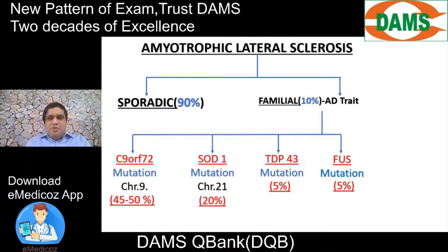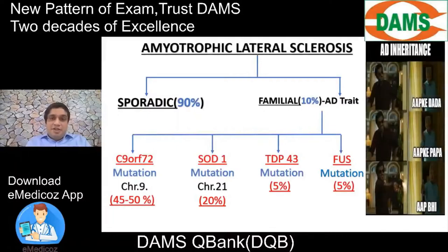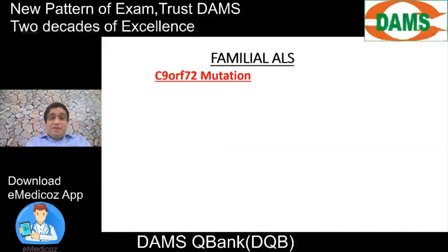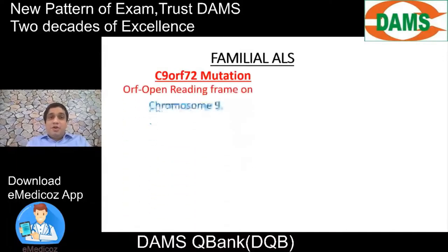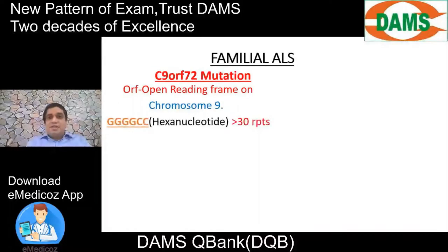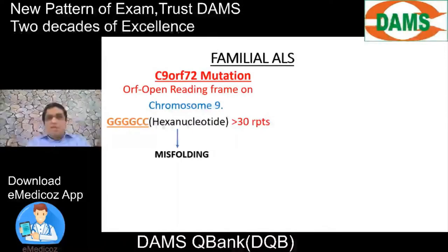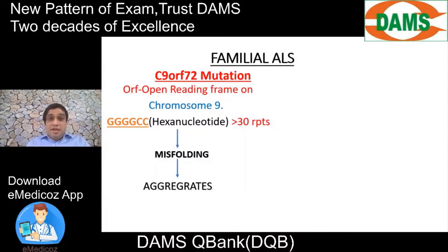Autosomal dominant trait means the condition passes from grandfather to father to son. The C9ORF72 mutation involves an open reading frame on chromosome 9, where a hexanucleotide of 6 nucleotides has more than 30 repeats, resulting in misfolding and aggregation of protein in brain cells, causing neurodegeneration affecting the corticospinal tract, corticobulbar tract, cranial nerve nuclei, or anterior horn cells in the spinal cord.